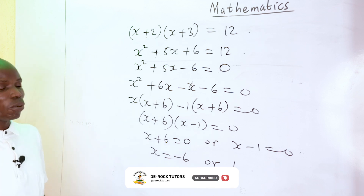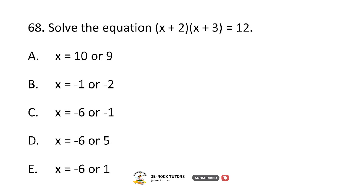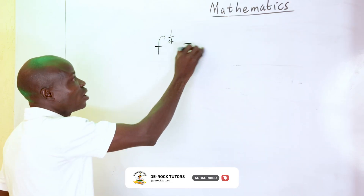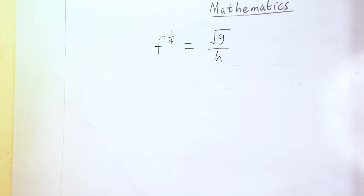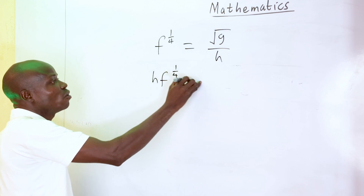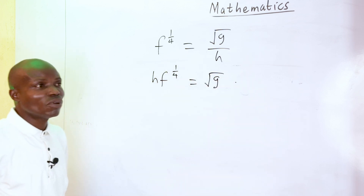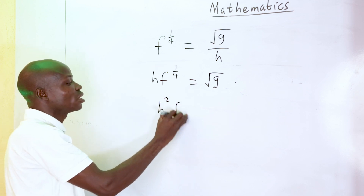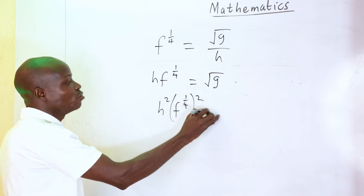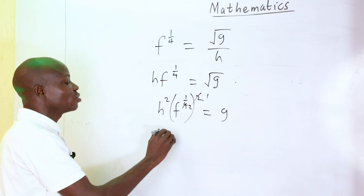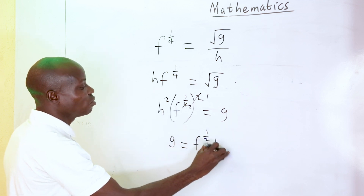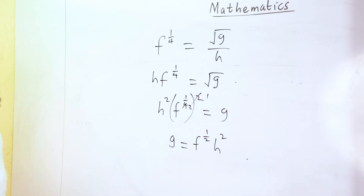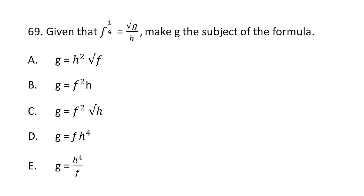Question 69: make G the subject of the formula in F to the power 1/4 equals root G over H. Multiplying both sides by H gives H times F to the 1/4 equals root G. Squaring both sides: G equals H squared times F to the power 1/2. That matches option A.